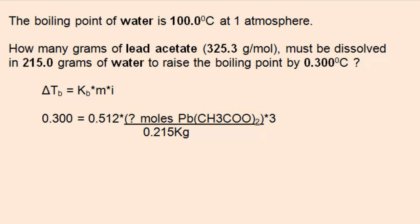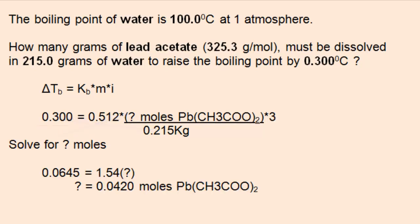There are a couple of ways of approaching this algebra problem. But the first thing I will do is cross multiply 0.3 times 0.215 to get rid of the fraction. Then multiply 3 times 0.512 to get 1.54. Then divide both sides by 1.54 to get 0.042 moles of lead acetate.